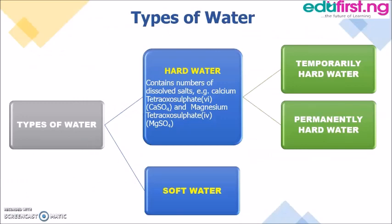We only have two types of water: hard water and soft water. Under hard water we have temporarily hard water and permanently hard water. Hard water contains soluble salts, namely calcium sulfate (CaSO₄) and magnesium sulfate (MgSO₄).